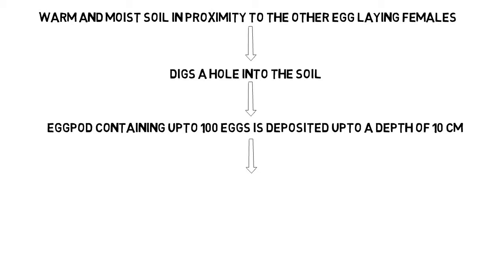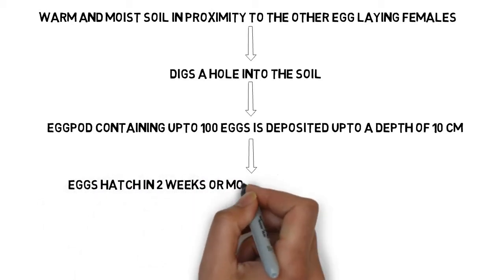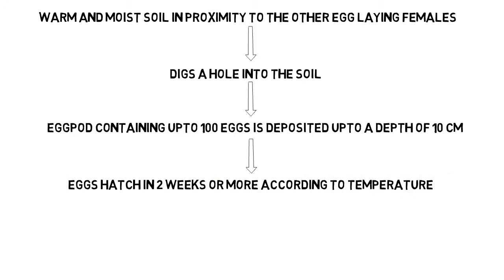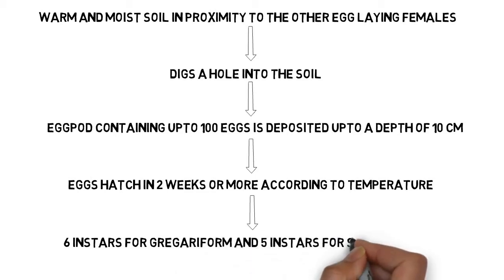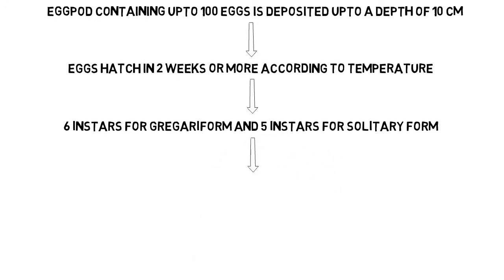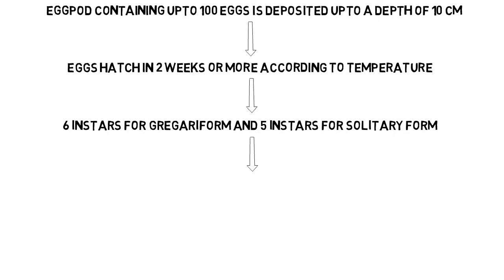The eggs are surrounded by foam and this hardens into a membrane and plugs the hole above the egg pod. The eggs hatch in two weeks or more according to the temperature. The newly hatched nymph soon begins to feed. If it is a gregarious individual, it is attracted to other hoppers and they group together, otherwise it stays alone. The gregarious form passes through six instars, whereas solitary form passes through five instars. After fifth molt it is soft and pink with drooping wings, but after a few days the cuticle hardens and hemolymph is pumped into the wings which stiffens them.